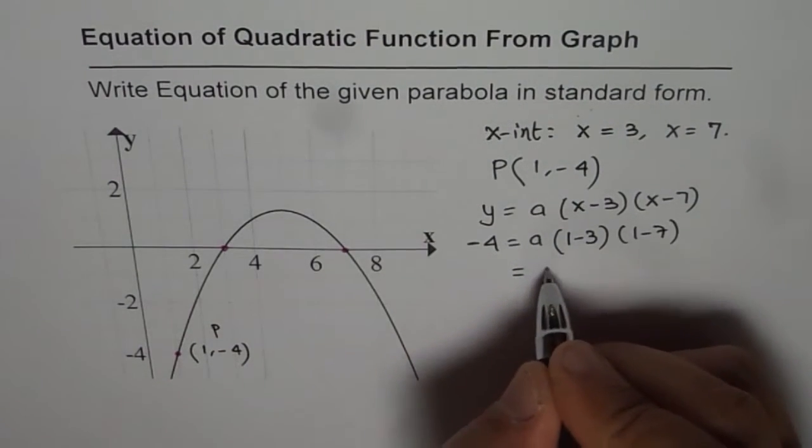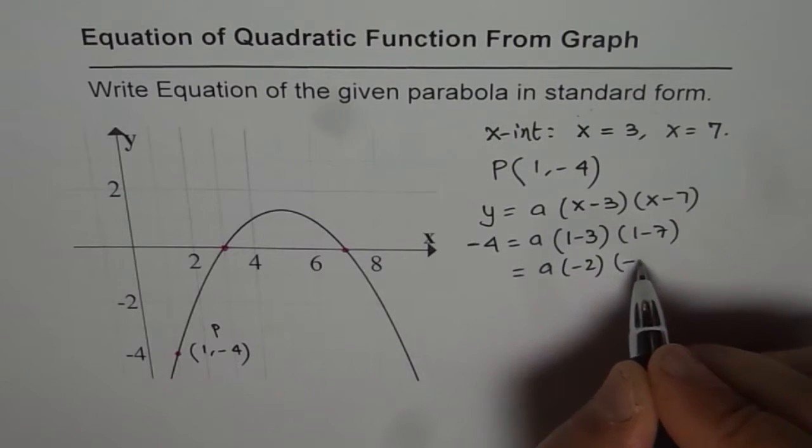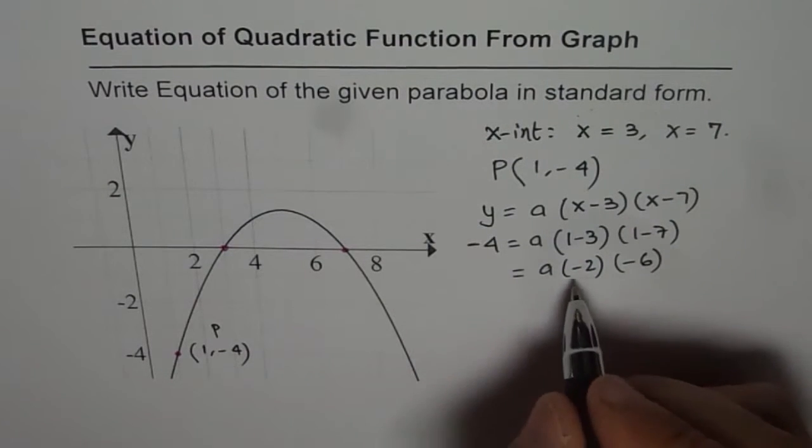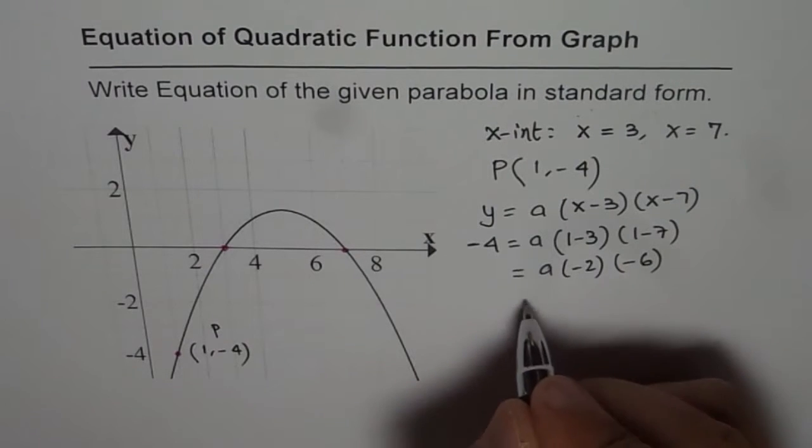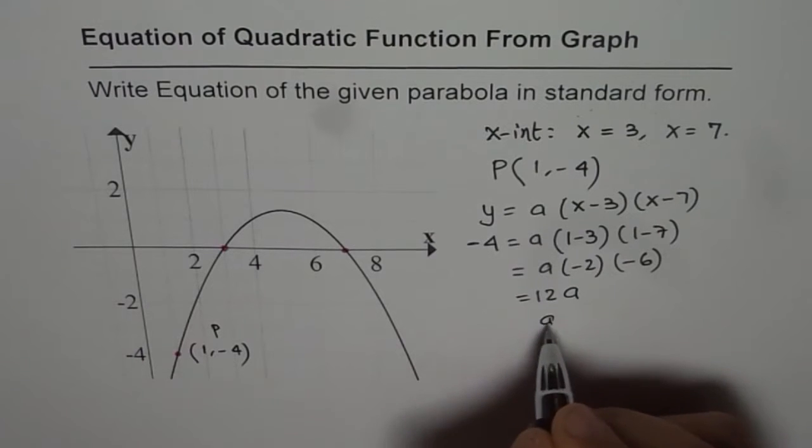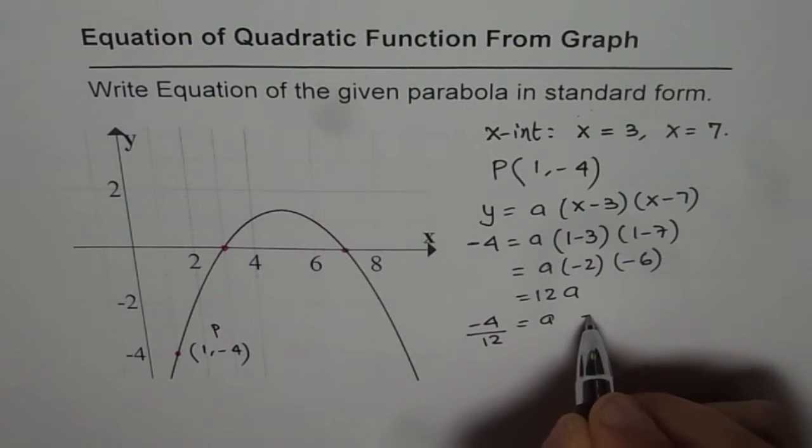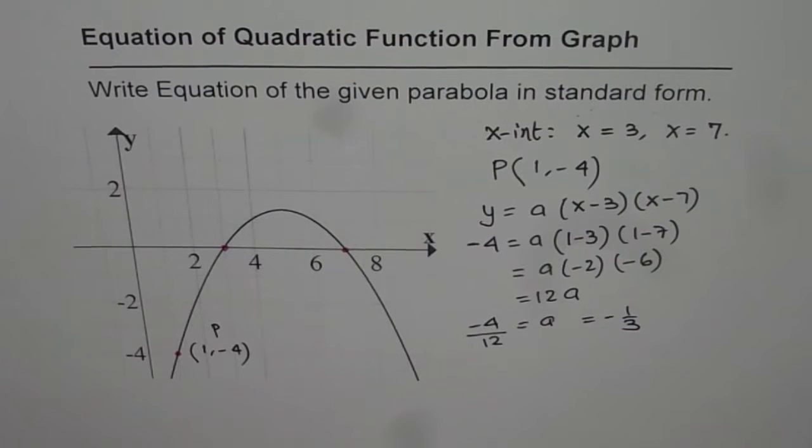So that gives you a times -2 times -6, which is 12a. So we get 12a on the right side. To find the value of a, we will divide -4 by 12. So a is equal to -1/3.